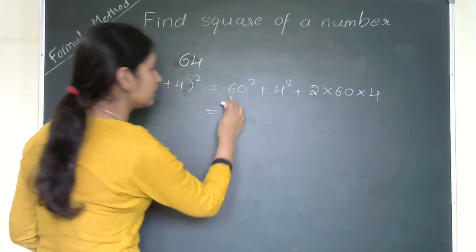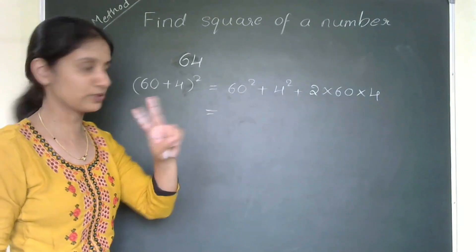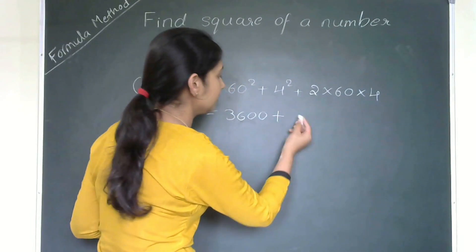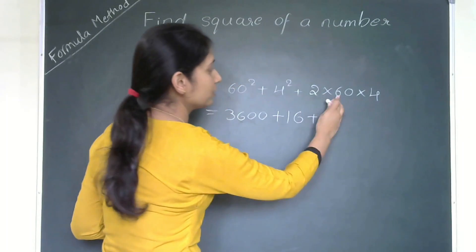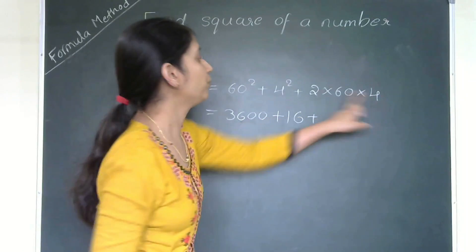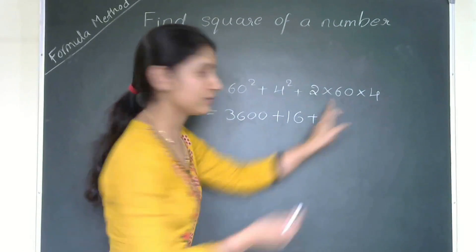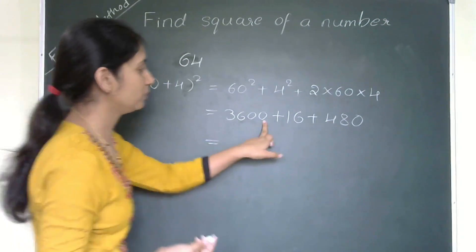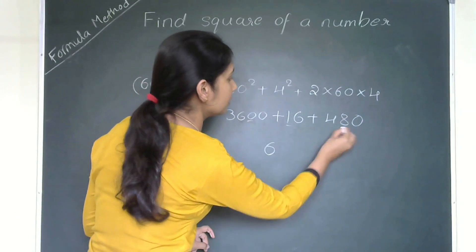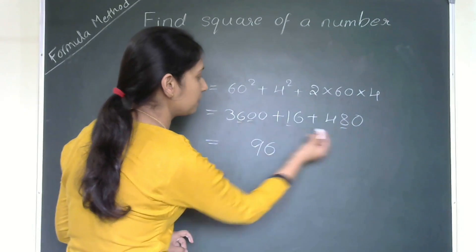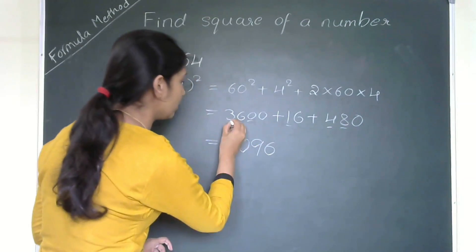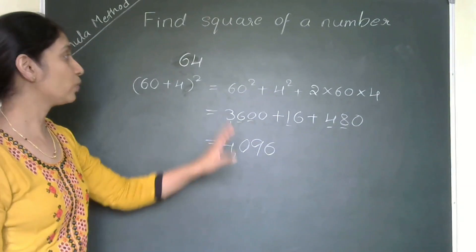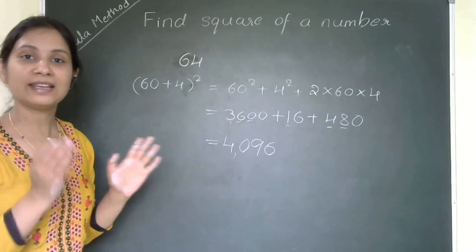Now solving this: 60² is 6² followed by 2 zeros, which is 3600. Then 4² is 16. Plus 2 multiplied by 60 multiplied by 4 — 2 times 4 is 8, and 8 times 60 is 480. Now adding: in the unit place you get 6, in the tens place you get 9 plus 8 is... let me add carefully — units: 6, tens: 9, hundreds gives 10, so 0 carry 1, and thousands: 3 plus 1 is 4. So 4096 is the square of 64. Very easily we have found it.